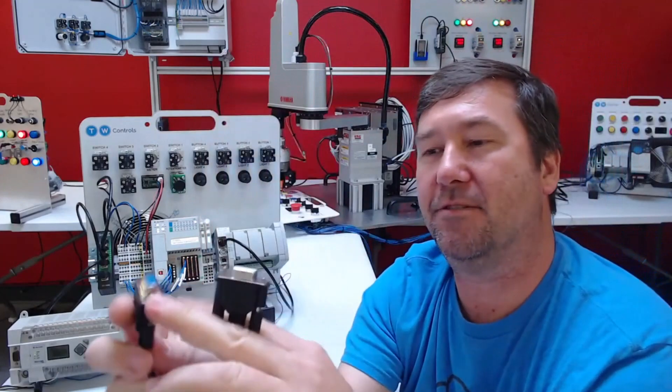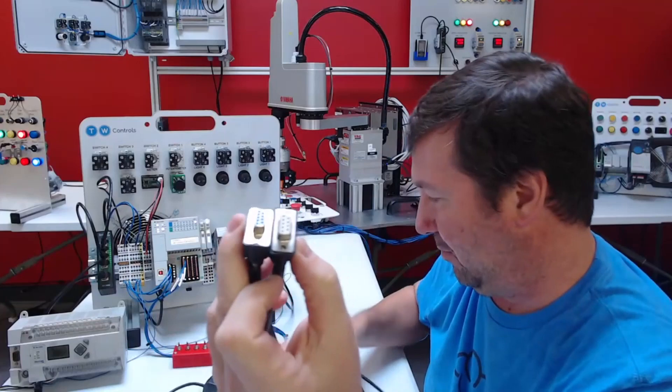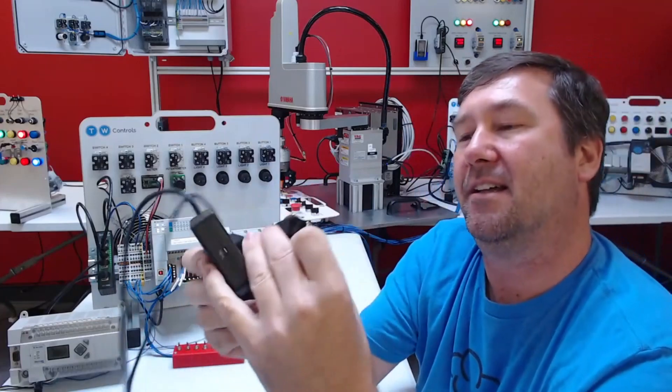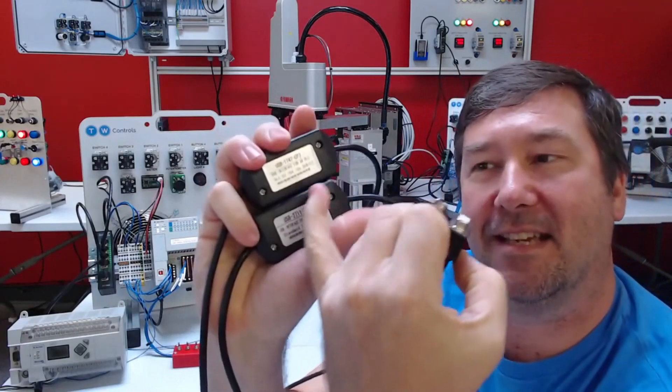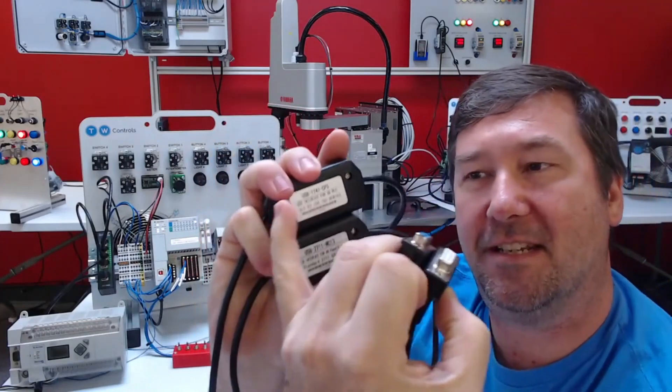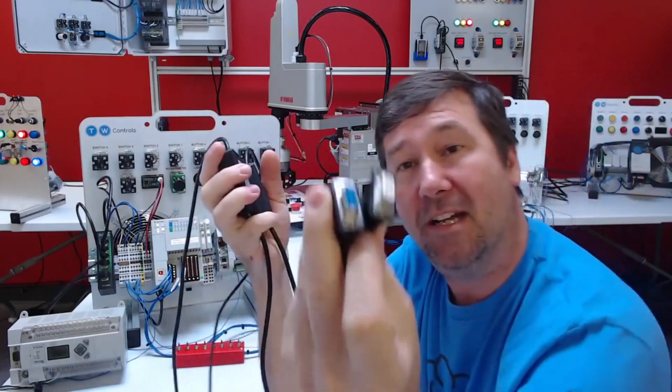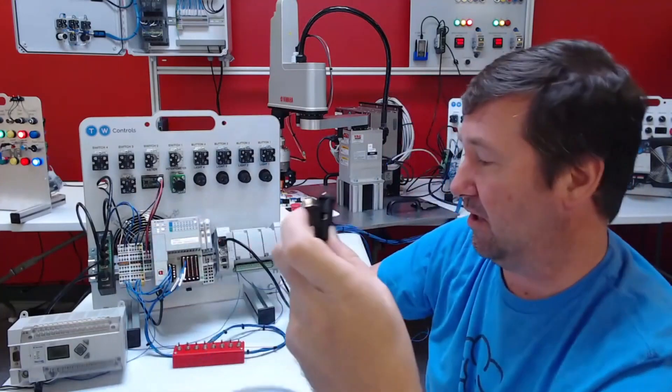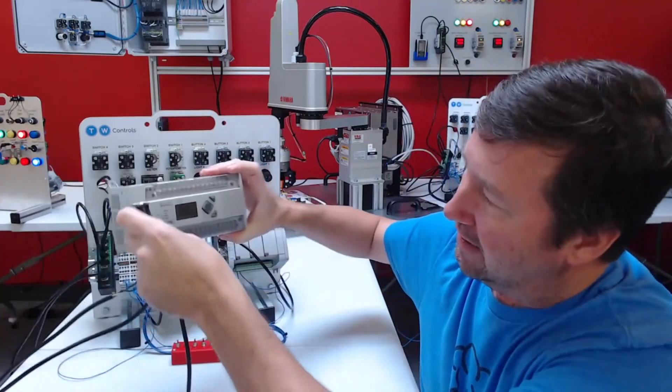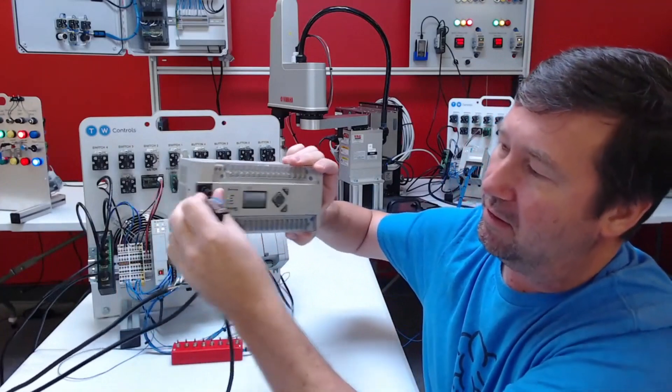But if you look at these two cables, well aside from the color which kind of helps me remember which one's which. One of these is a 2711-NC13, the other is a 1747-CP3. But if you look at them they're identical cables. But they won't work.